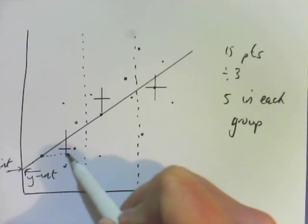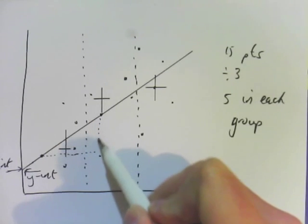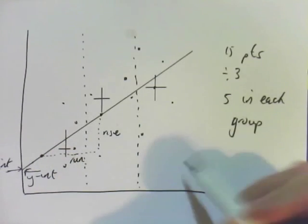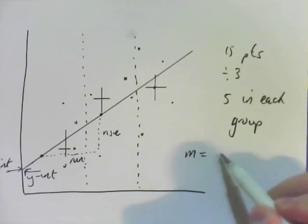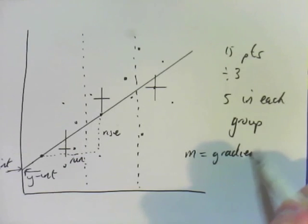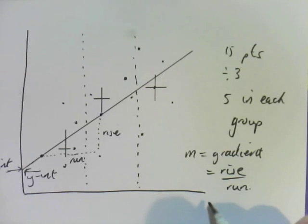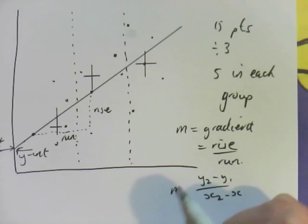And we use those two to calculate the gradient. So we do that with rise and run. So m, which is your gradient, equals the rise over the run. Some of you may have seen that as y2 minus y1 over x2 minus x1. That's a perfectly reasonable way of doing it as well.